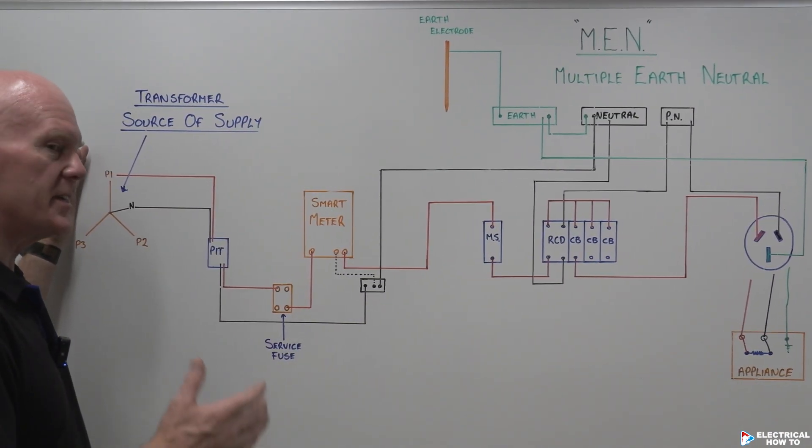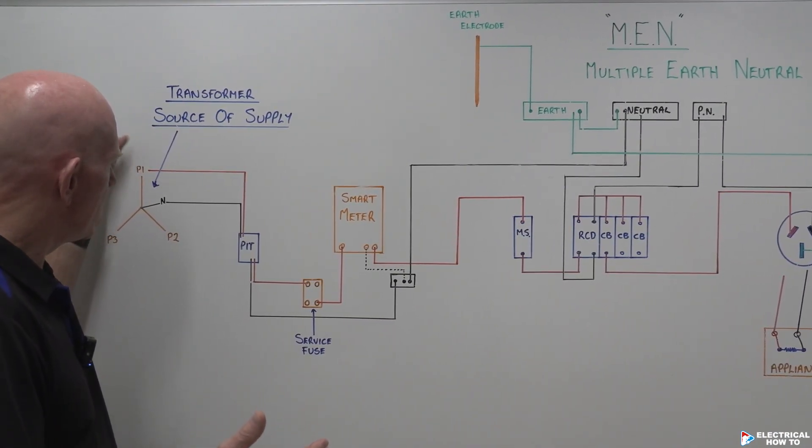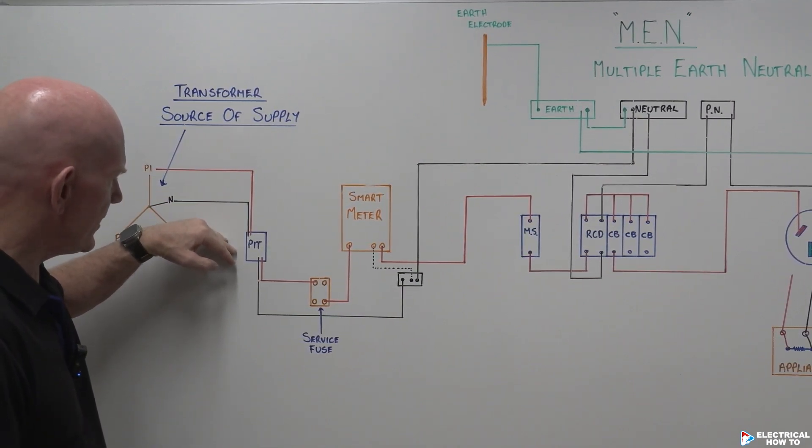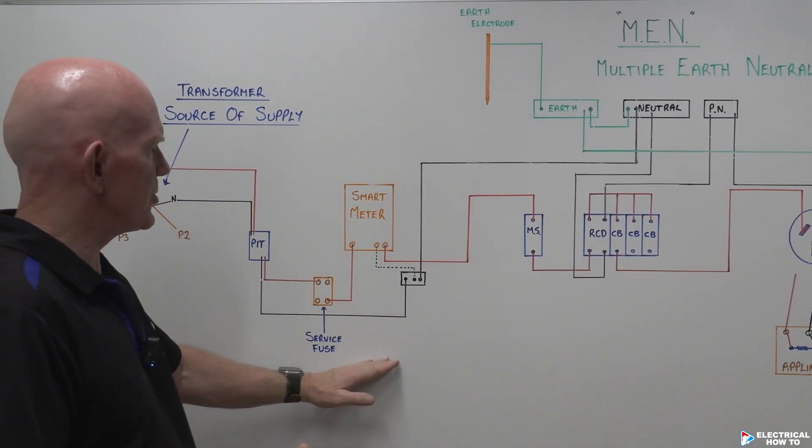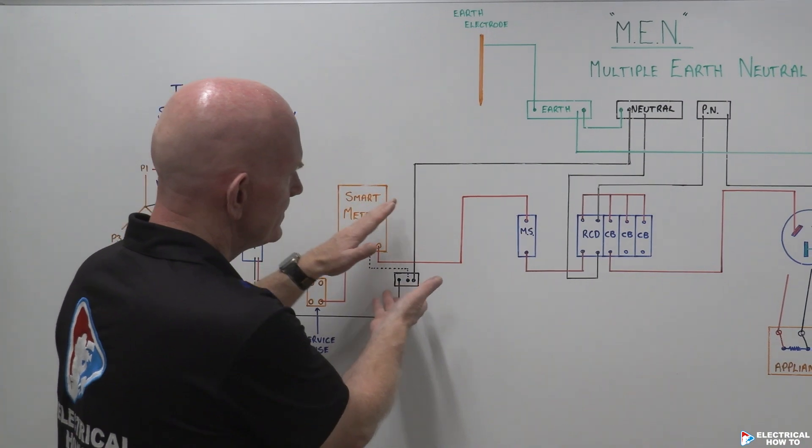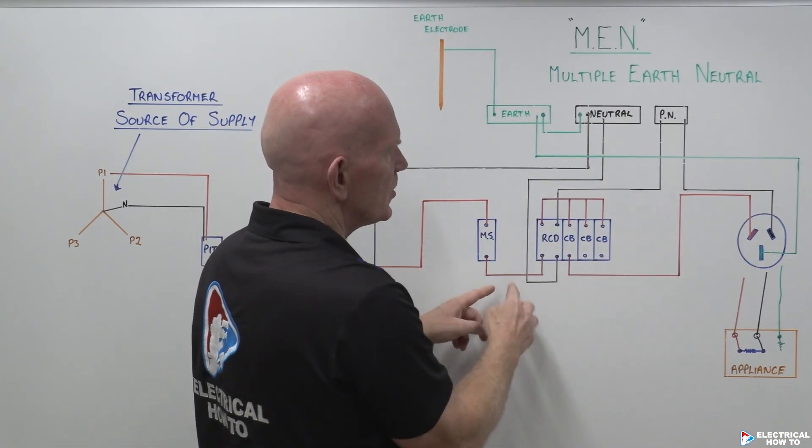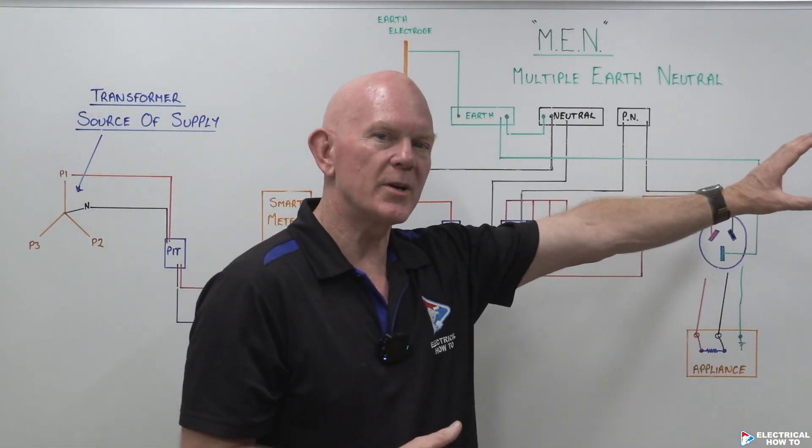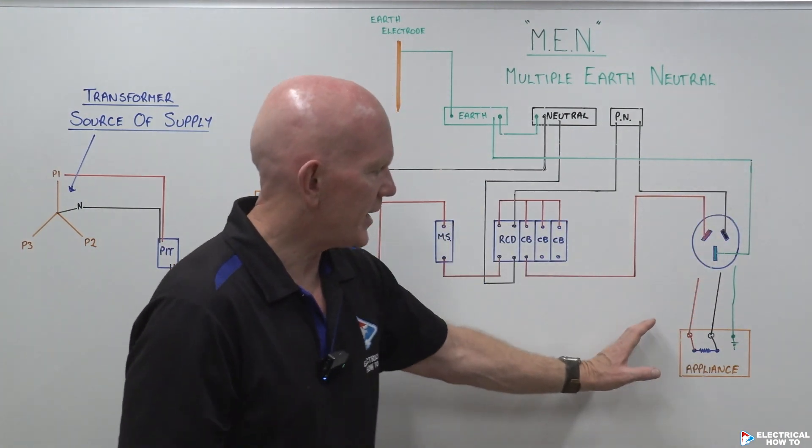We've got our transformer, which is our source of supply. We've got our pit in the street, your underground coming in, your consumer's mains through your meter, and then we've got our switchboard. Out in the field, we've got a power point and we have an appliance.